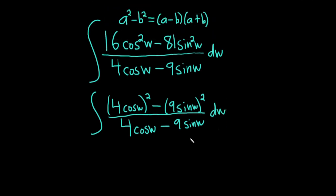Okay, so now we can use the difference of squares formula. This piece here is our a and this piece here is our b. So it's a minus b times a plus b according to the formula.